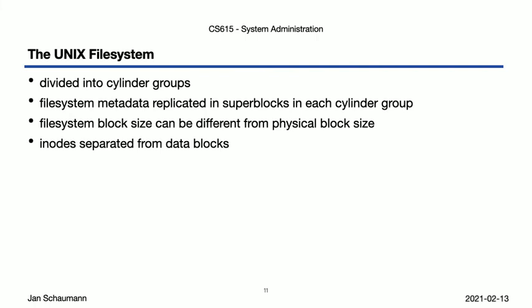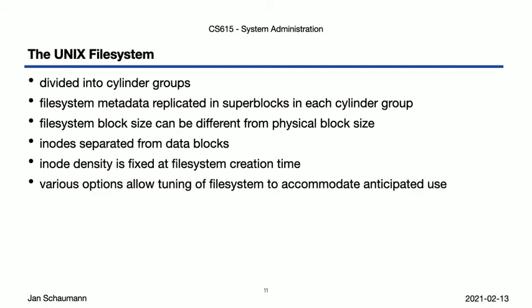Talking about inodes, we observed that the total number of inodes — that is, the total number of files the filesystem can hold — is fixed at filesystem creation time. And that, together with the filesystem block size, are just two of the various things we can tune at filesystem creation time to accommodate the anticipated use of the disk. If we know this disk is intended to store primarily a small number of really large files, you might choose a different inode density and block size than if you wanted to store huge numbers of tiny files. In the first case, you'd use a larger block size to improve I/O and select a smaller number of inodes and fragments; in the latter, a smaller block size and larger number of inodes. The FFS manual page in section 5 has a lot more details, and it'd be a good exercise to try creating filesystems using different parameters to observe performance differences.